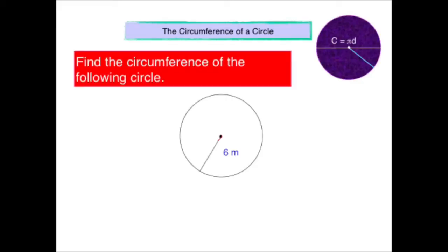So here's another example where we're asked to find the circumference of a circle. But you'll notice this time it's slightly different because this time we're just given the radius of the circle. The radius is 6 metres in this case. And our formula involves the diameter. But we know that the radius is half of the diameter.